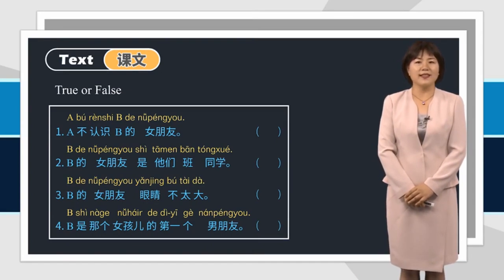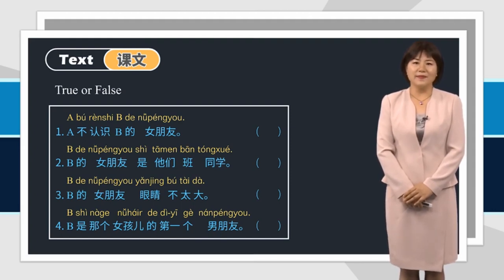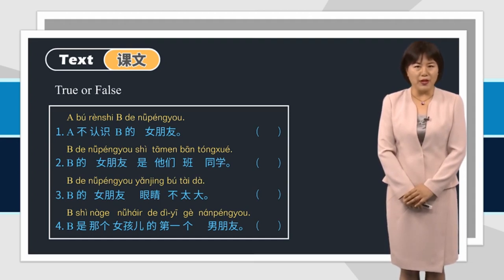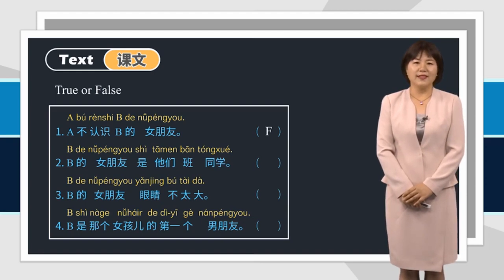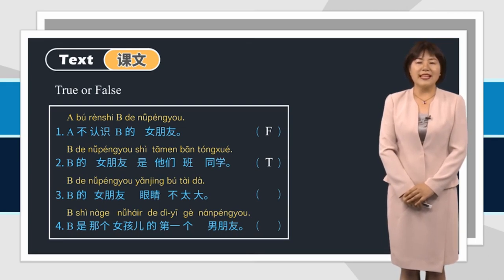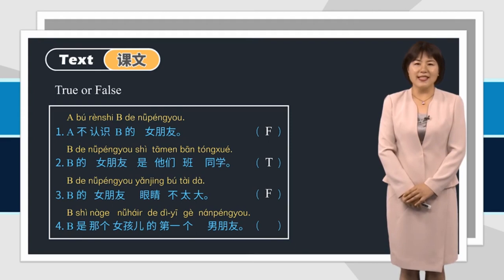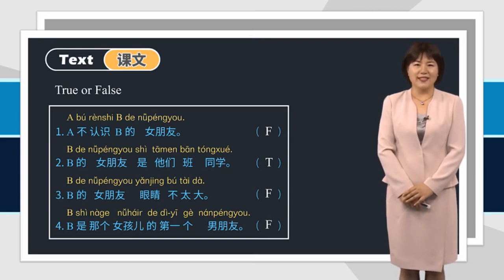There are several sentences on the screen — please mark true or false according to the dialogue. Let's check the answers. 1. A不认识B的女朋友。2. B的女朋友是她们班同学。3. B的女朋友眼睛不太大。4. B是那个女孩的第一个男朋友。Well done!